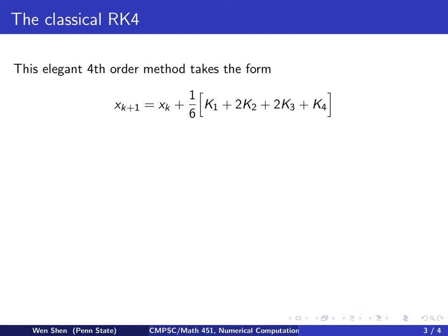So among all fourth order methods, the most celebrated one is the classical Runge-Kutta fourth order method. It takes a very elegant form. xk plus 1 is updated as xk plus 1 over 6, times the sum of four constants: k1, k2, k3, k4, added up with weights 1, 2, 2, 1.